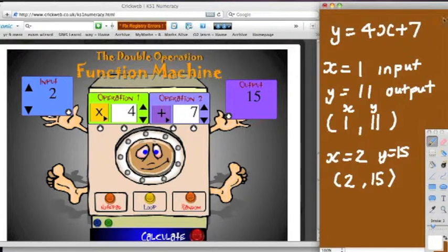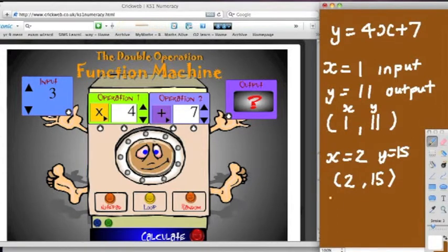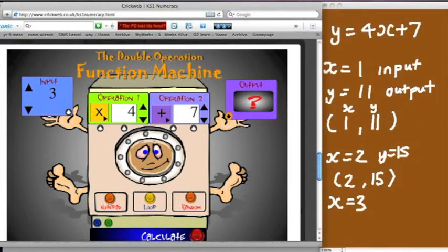Okay, let's just do one more. Hide the answer. Let's change my input value to 3. Click calculate. So let's all think what that's going to be. When x equals 3, you've got to times by 4 and add 7. Okay, let's see if we're right. 19.